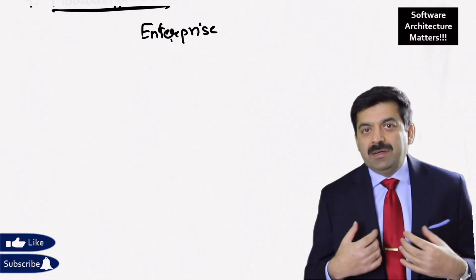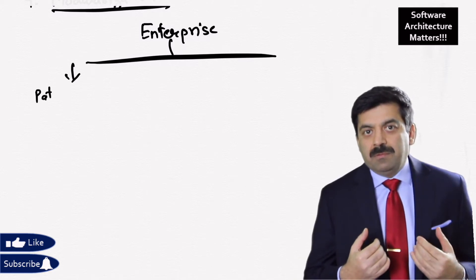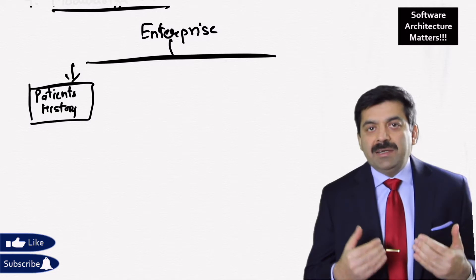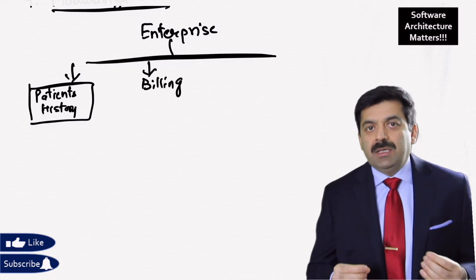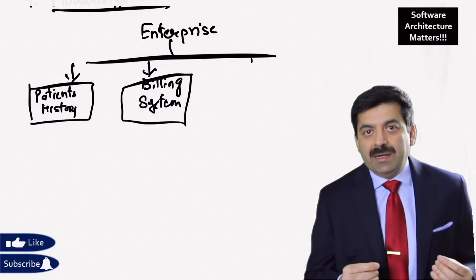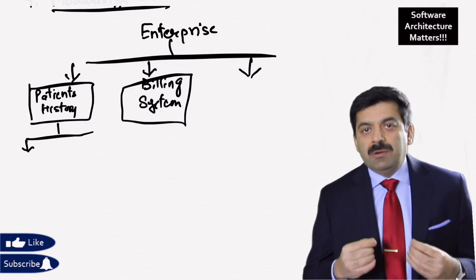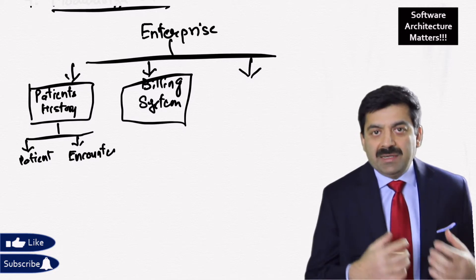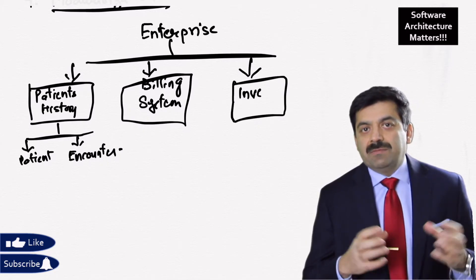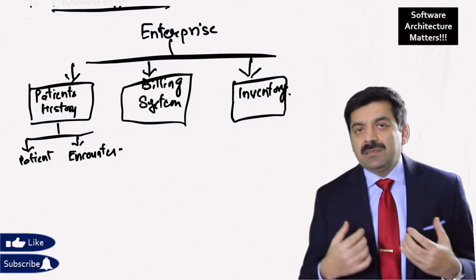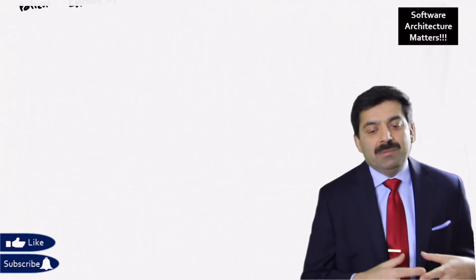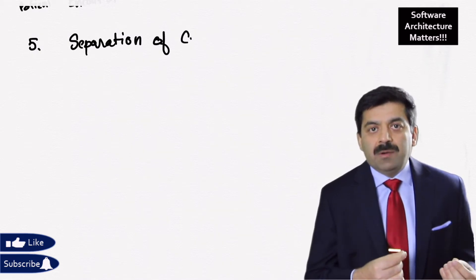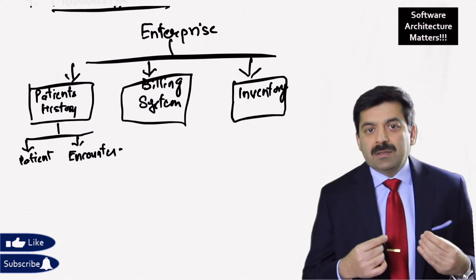Once we have identified abstractions, encapsulated them into classes, and decided what information should be public, next comes modularity. Modularity is the process where we put these abstractions into packages, components, or subsystems. These components are the physical containers of the functionality. For example, in an enterprise we may have a patient history application, a billing application, and an inventory application — we can package and build separate applications for these departments.